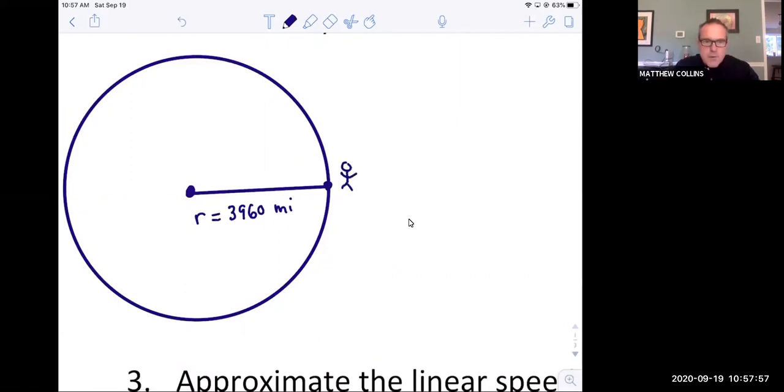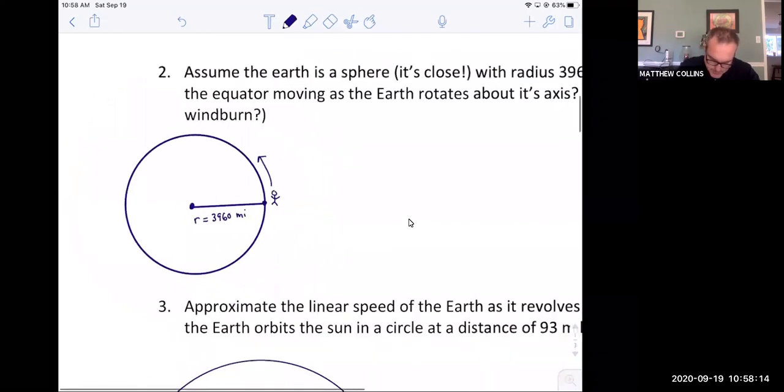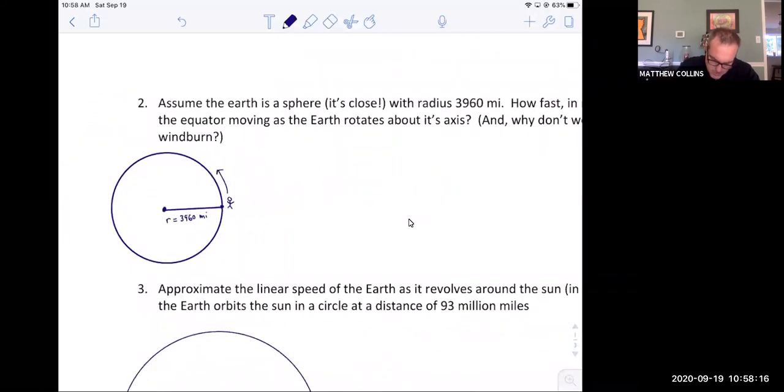And of course, what does the earth do? It spins around on its axis. We can picture the guy going this way. Envision the earth that you're looking at it from above the North Pole, right? And the earth is spinning. And of course, so is that guy, because he's at the equator. Want to know how fast is he moving?